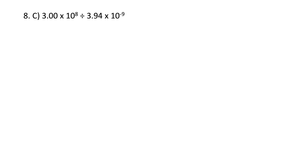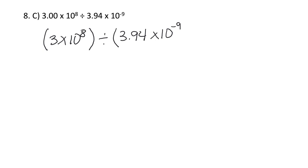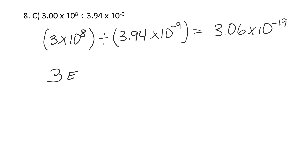This is the one where those parentheses really matter if you do not have the EE button. In your calculator, type parentheses, 3 times 10 to the eighth — notice you don't need to put 0.00, the calculator doesn't need that. Then hit divide, open the next parentheses, 3.94 times 10 to the negative ninth, close parentheses. You get 3.06 times 10 to the negative 19. With the EE button: 3, EE, 8, divided by 3.94, EE, negative ninth — same answer.